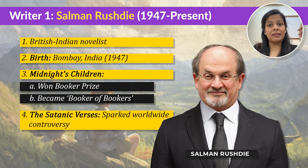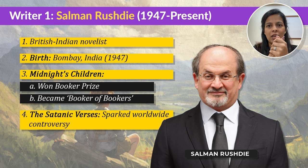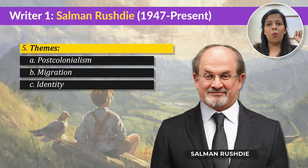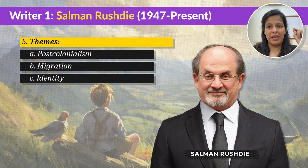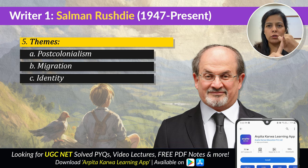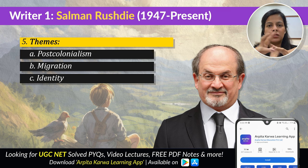And then there's another work by him, The Satanic Verses. This novel sparked huge controversy worldwide and even led to a fatwa on his life — it's pretty intense. One of the things Rushdie does best is that he dives into big themes like postcolonialism, migration, and identity. These are themes you will commonly see in his books.